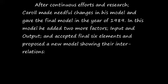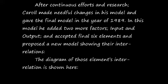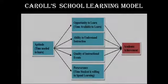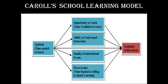The diagram of those elements' interrelations is shown here — Carroll's school learning model. Here he has proposed six elements and added two more elements, those are input and output. Input as aptitude and output as academic achievement.